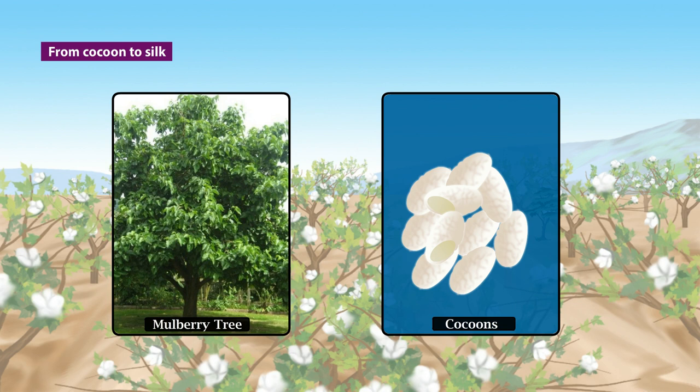Silkworms feed on mulberry leaves; hence, the rearing of silkworms involves cultivation of mulberry trees, which provide a regular supply of leaves. Worms are introduced through DFLs — disease-free layings, i.e., eggs. Depending upon environmental conditions, farmers can harvest the cocoons 4 to 8 times in a year.